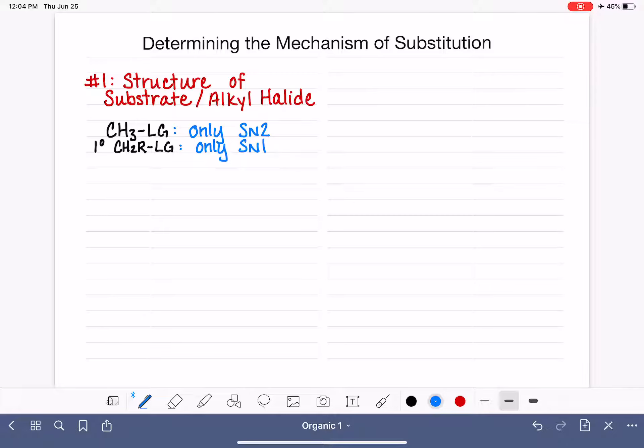If we have a secondary alkyl halide, so that's going to be a carbon with one hydrogen, two carbon chains attached, and some sort of leaving group. The secondary alkyl halides, or whatever the leaving group it might be,